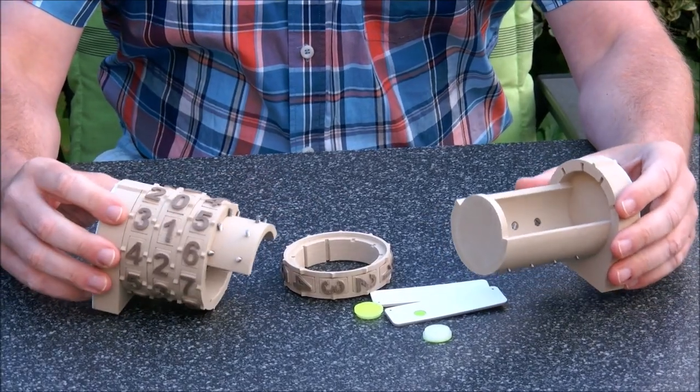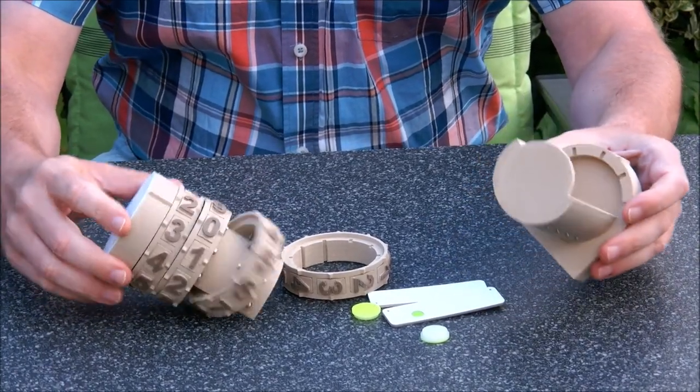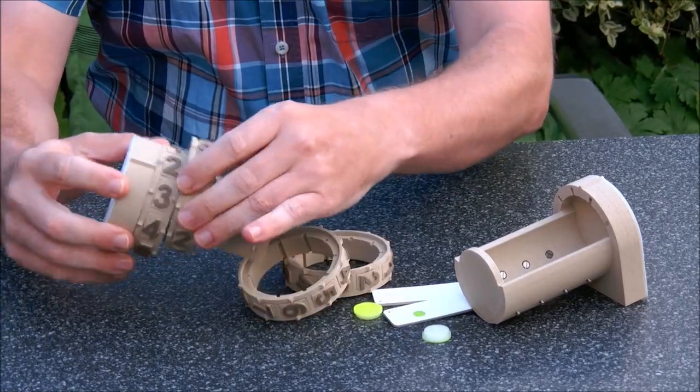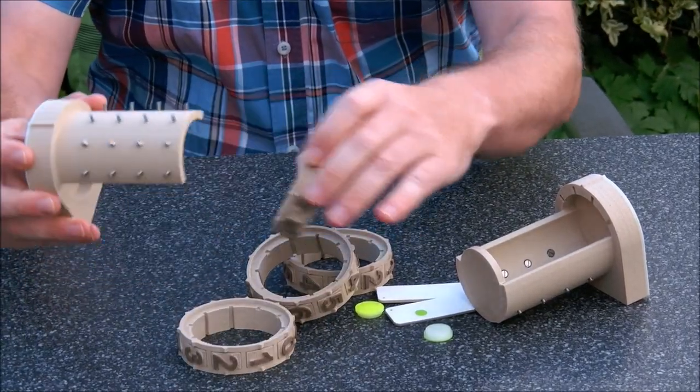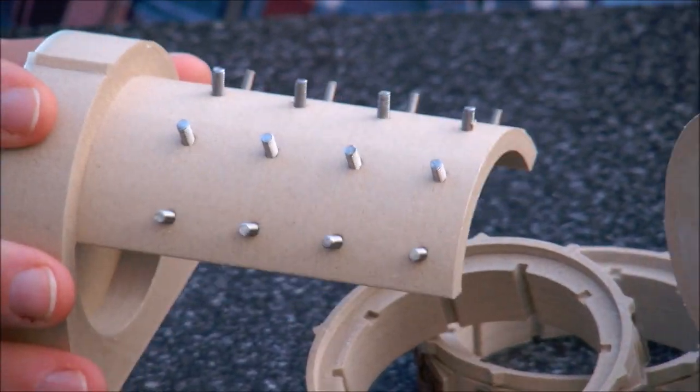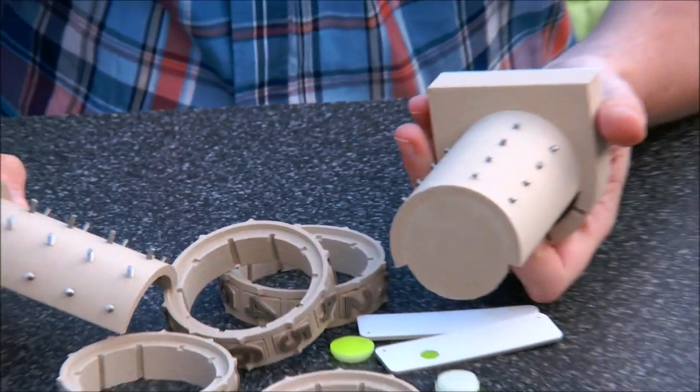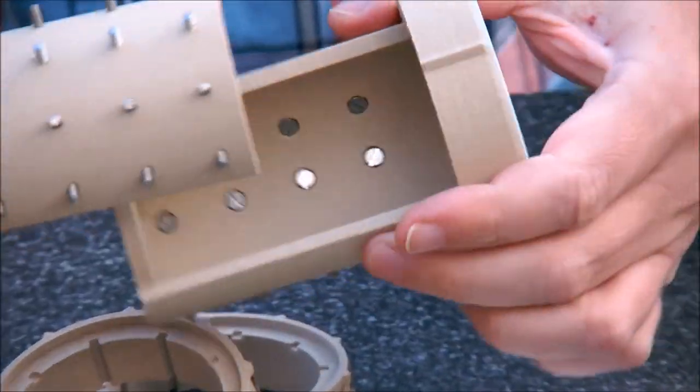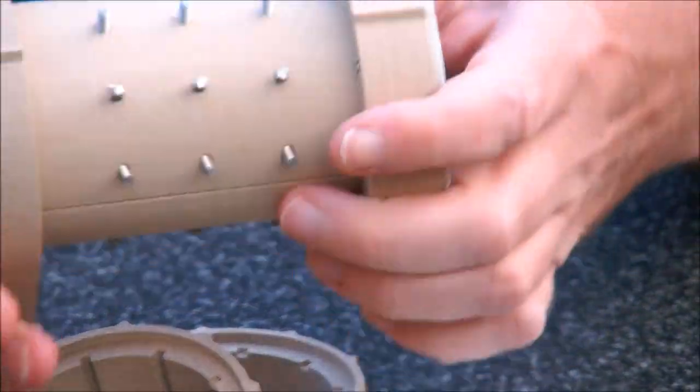So let me show you how the Combination Box works. You see, there are these rotors, and there are screws. There is a box, and here we have also screws.